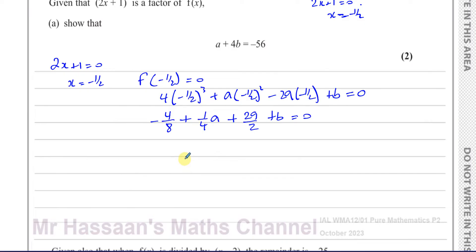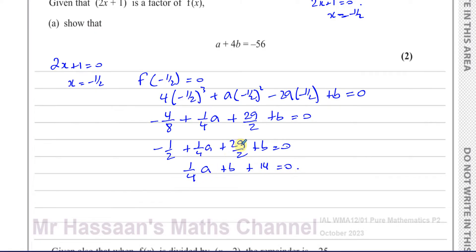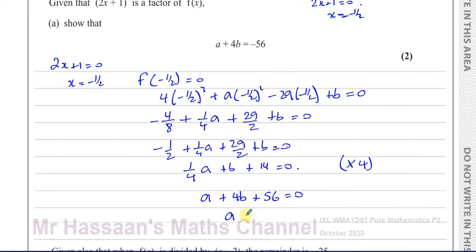Simplifying: -1/2 + a/4 + 29/2 + b = 0. Combining -1/2 and 29/2 gives 28/2 = 14. So we have a/4 + b + 14 = 0. Multiplying everything by 4 to clear the fraction: a + 4b + 56 = 0. Subtracting 56 from both sides gives a + 4b = -56, which is exactly what we had to show. That's the answer to part (a).